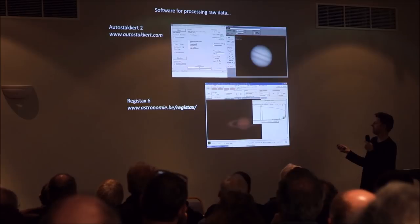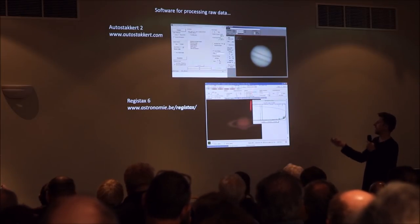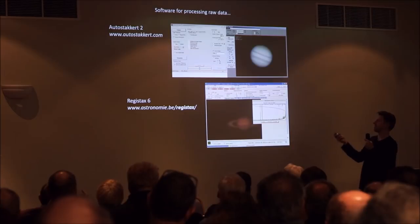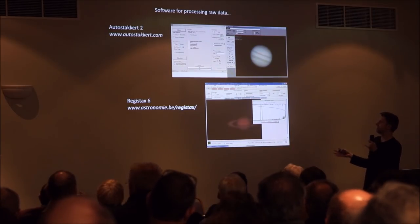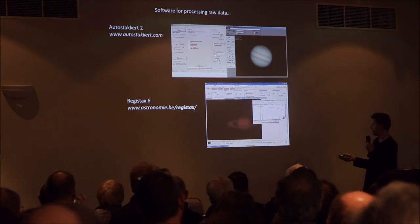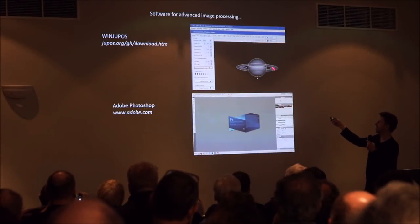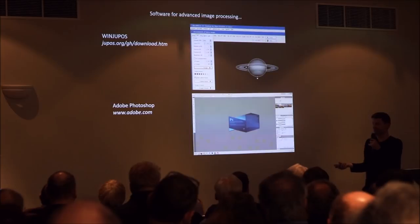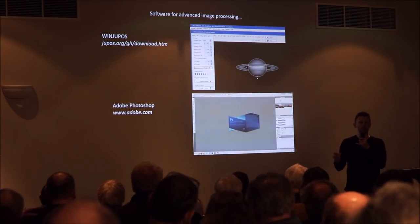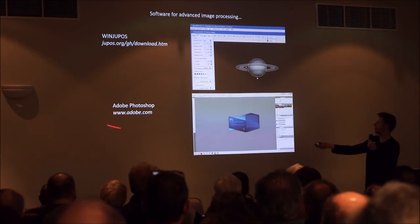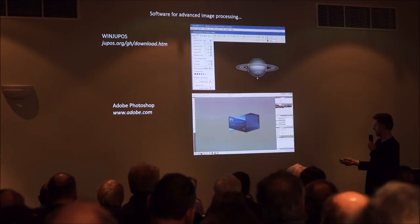For processing the raw data, the primary programs are AutoStacker and RegiStax. Typically we use AutoStacker to stack the frames from the video sequences — the software filters out the poorer frames and stacks the best ones together. With RegiStax, you typically sharpen the images. WinJUPOS we use for image derotation, which allows us to compensate for the rapid rotation of gas giant planets like Jupiter and Saturn, enabling us to add more data into one image for a better quality result. And of course Adobe Photoshop for all kinds of post-processing routines.